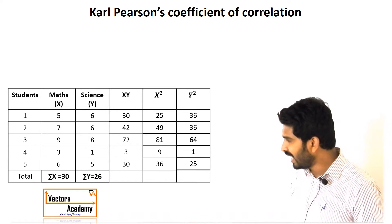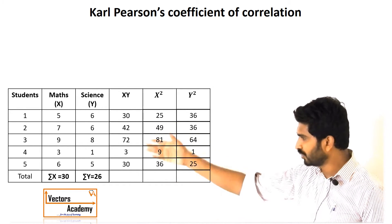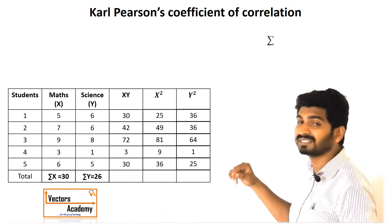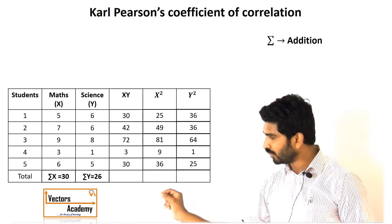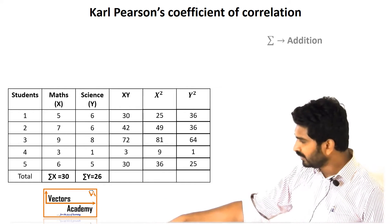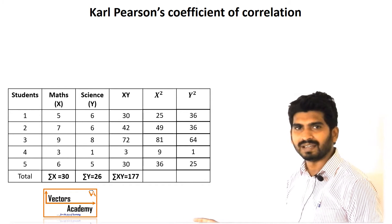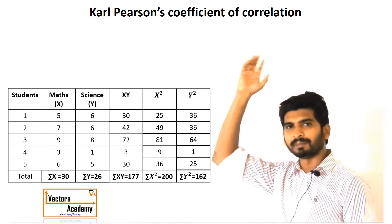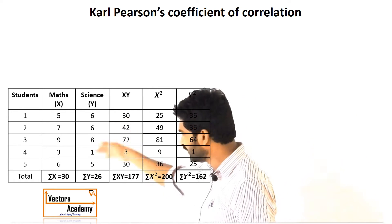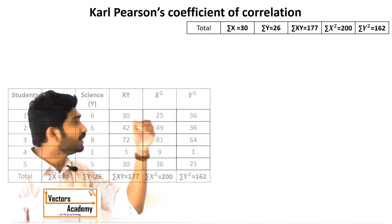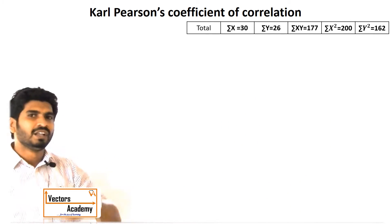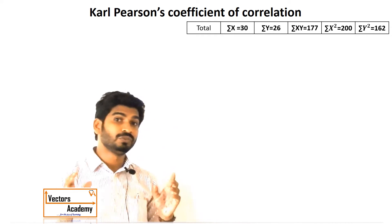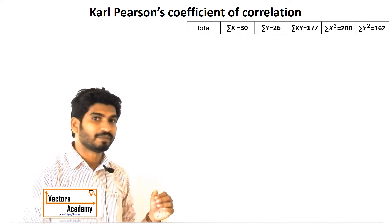Once the table is complete, we need to calculate the addition of all the columns to find r. Adding all x values gives a summation of 30. We note all these summation values separately, as they will be needed in the formulas to calculate r.